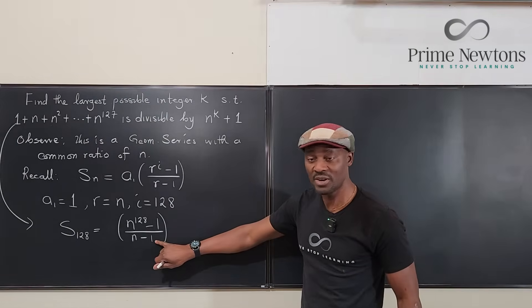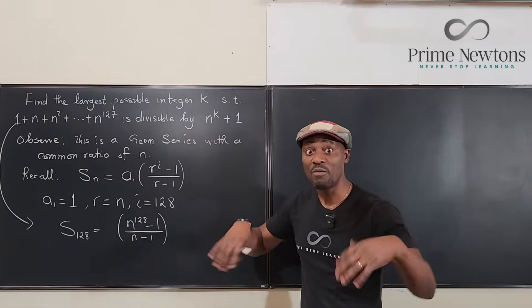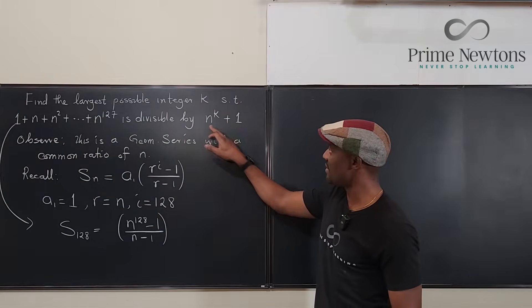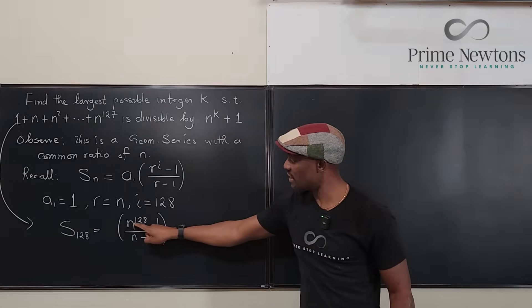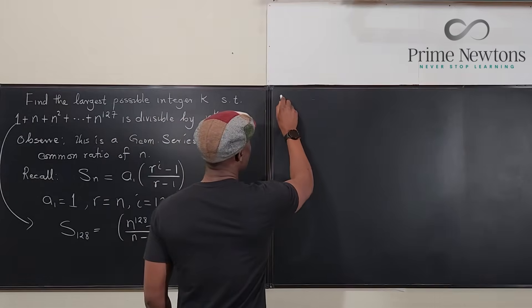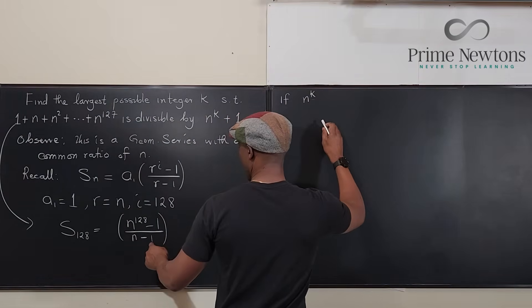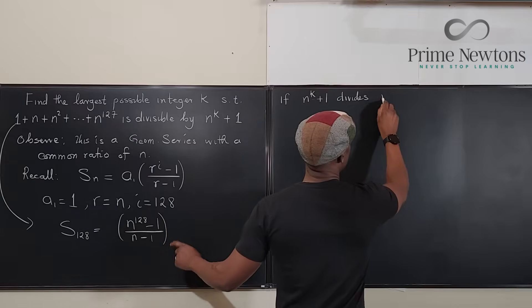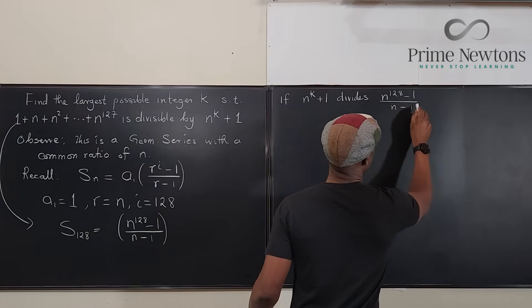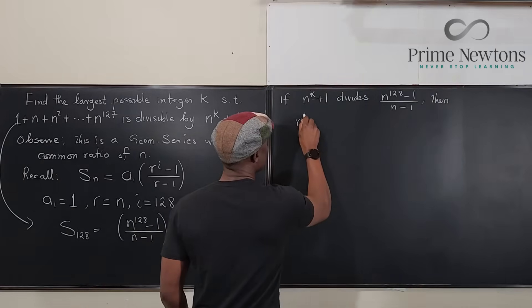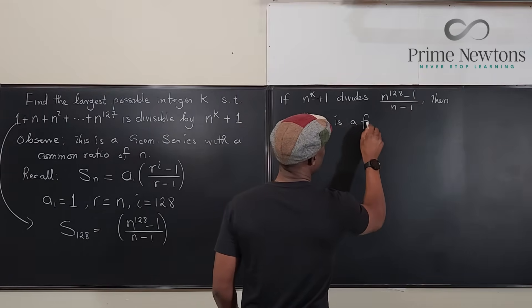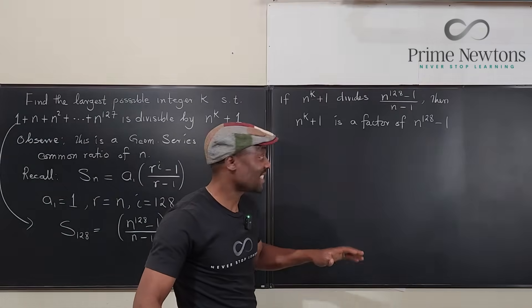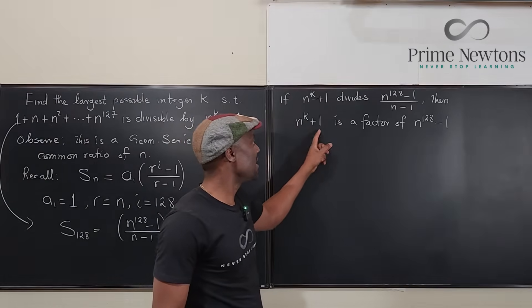Because this is in the denominator, if you want to do any dividing, you can only divide the numerator of a fraction. So it means if at all we can divide this by this, then n to the k plus 1 can only divide the top. If n to the k plus 1 divides n to the 128 minus 1 over n minus 1, then n to the k plus 1 is a factor of n to the 128 minus 1.